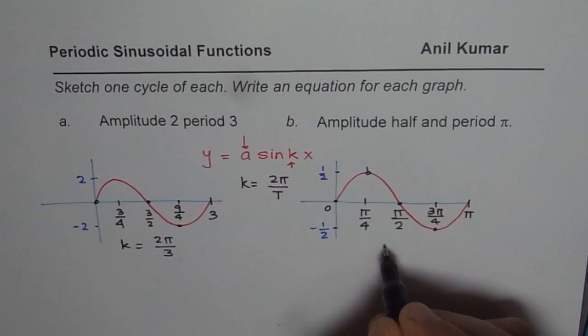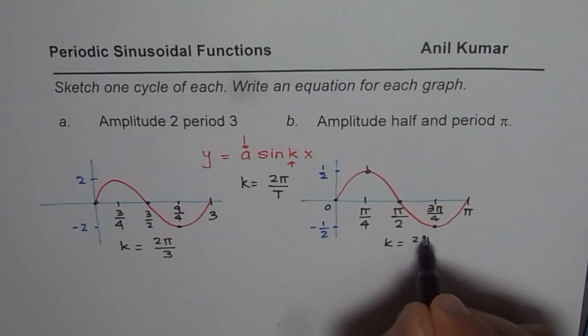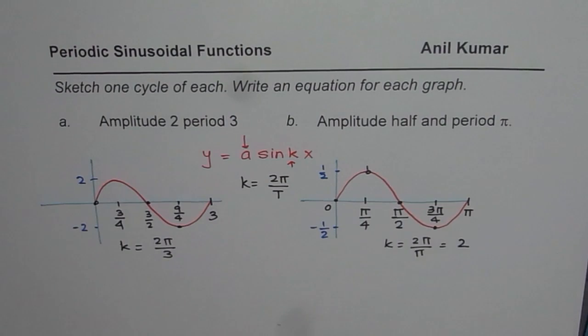So for the first case, period is 3. So we can find k as equals to 2 pi by 3. In the second case, k is equals to 2 pi by pi, so it can be simplified to 2.